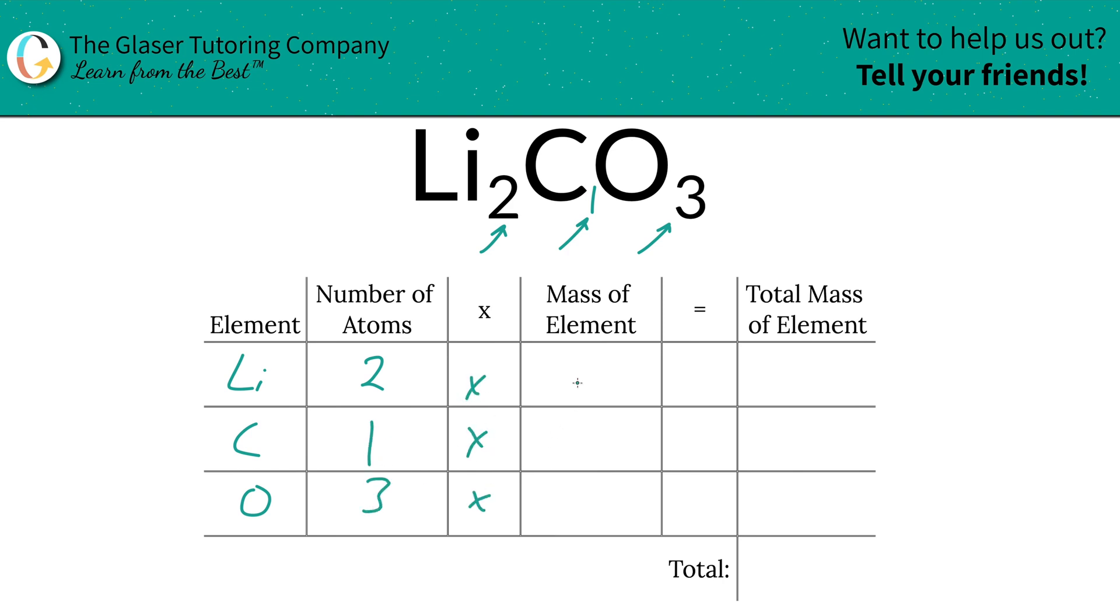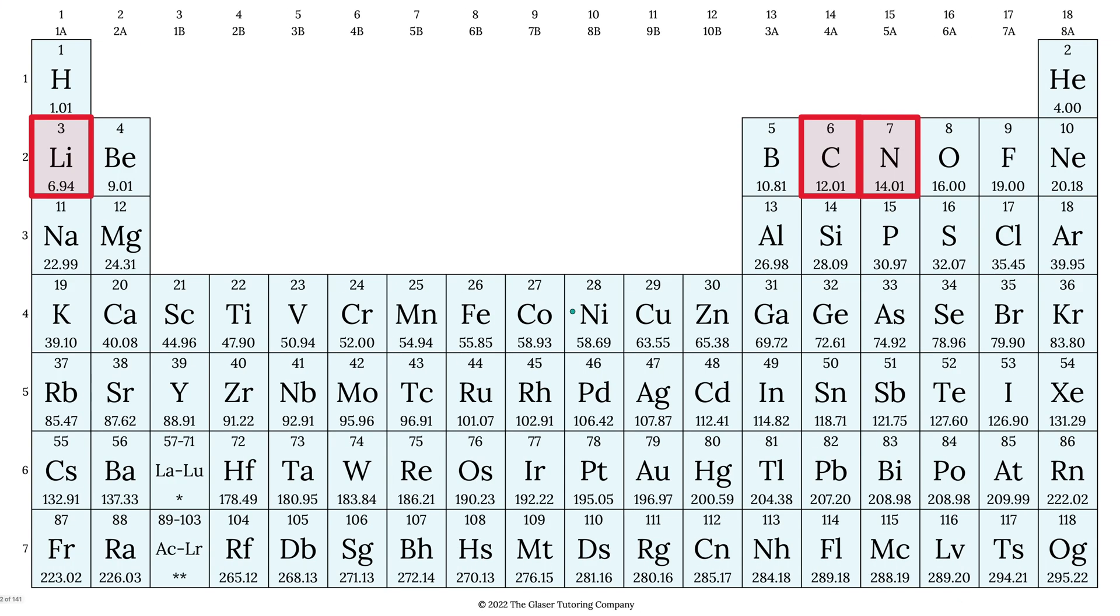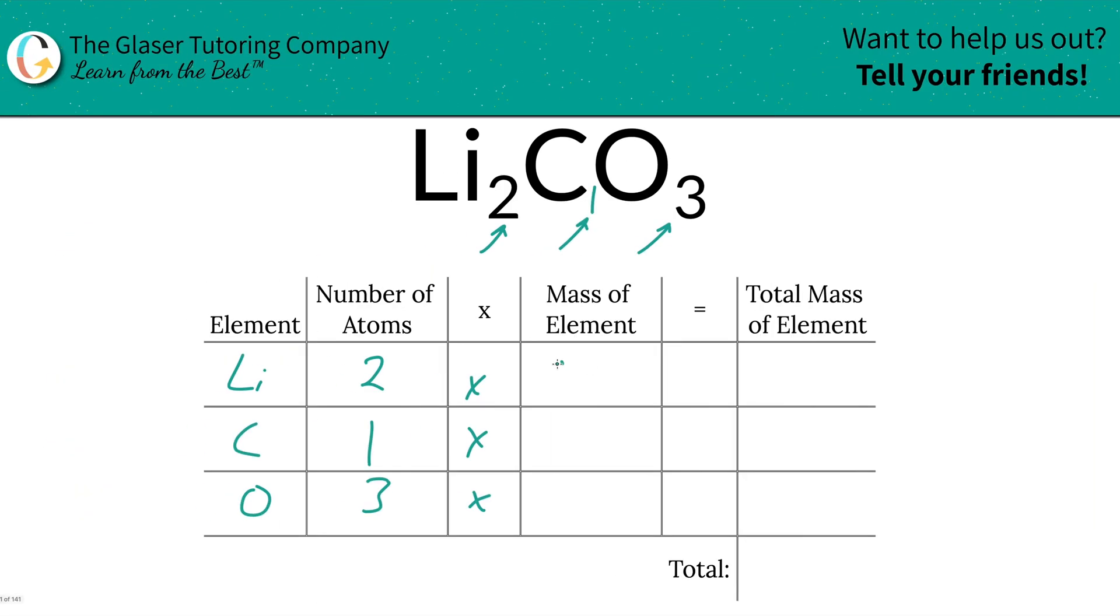Then we're going to multiply each of those number of atoms by the mass of the element. These masses are found on the periodic table. So the mass of lithium is 6.94, carbon is 12.01, oxygen is 16.00. So let's write that in. This is 6.94, carbon was 12.01, and oxygen is 16.00.